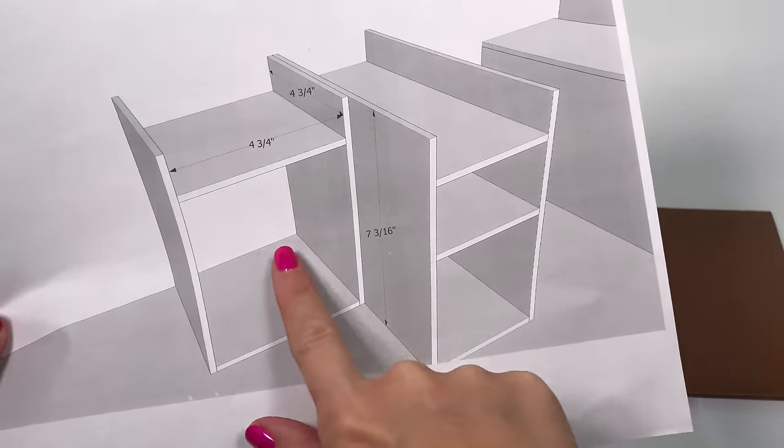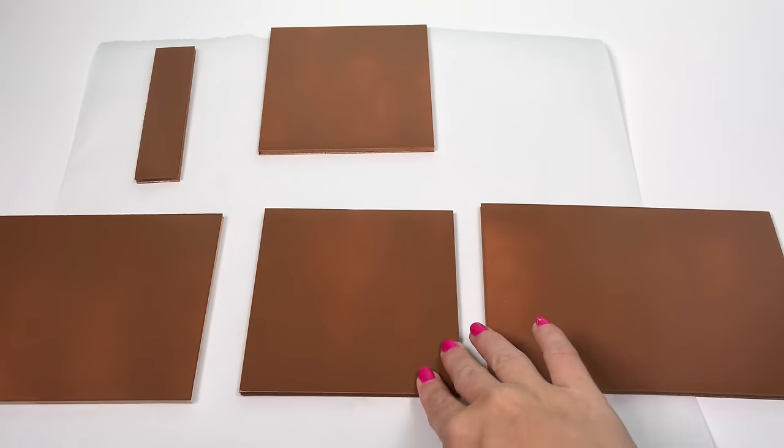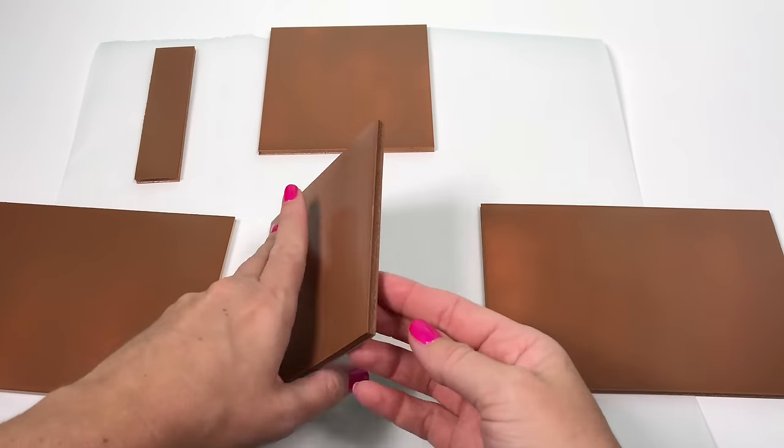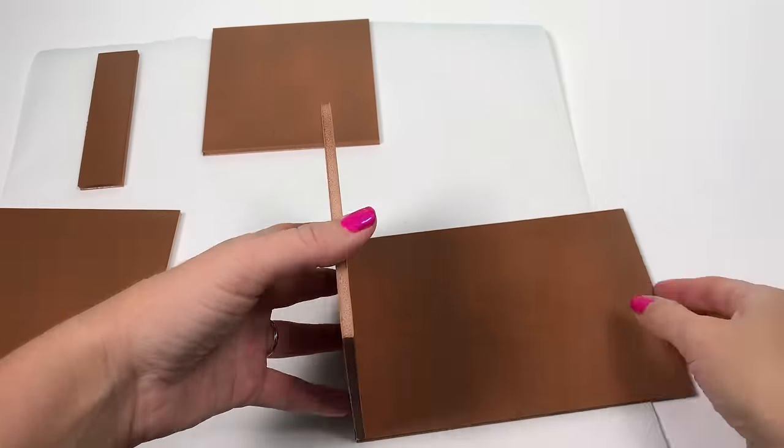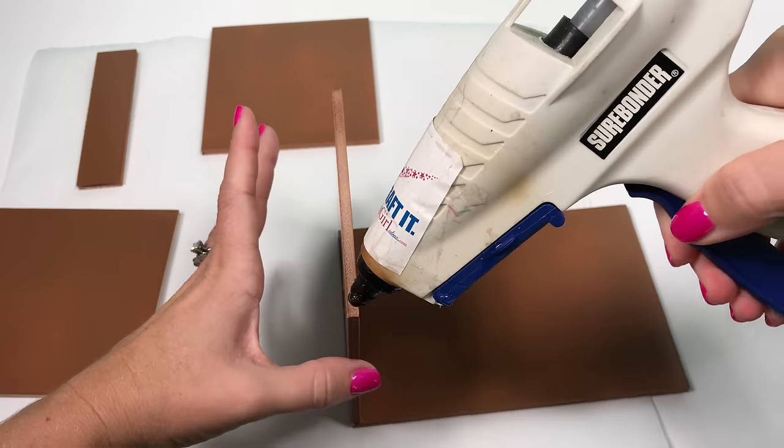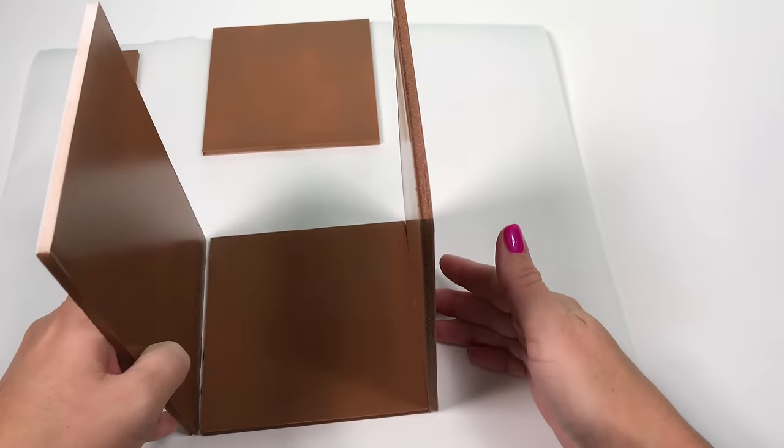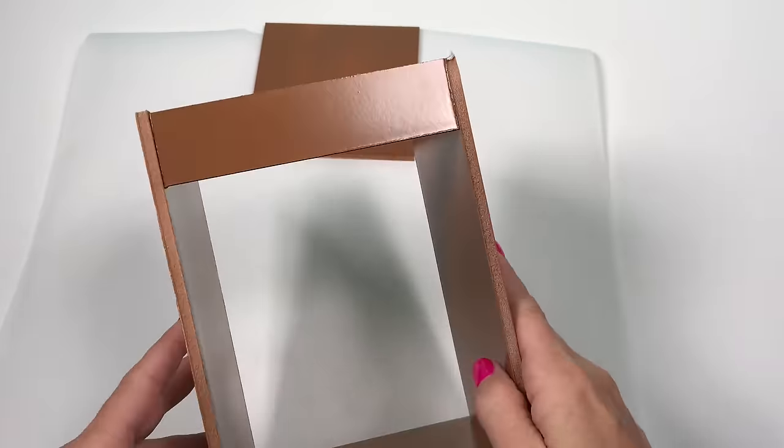Now put together the mini fridge. The walls for the fridge are brown but the door is going to be a different color. Start from the bottom and work your way up. Apply glue to the base and add the side walls. Then add the top and the top cover.